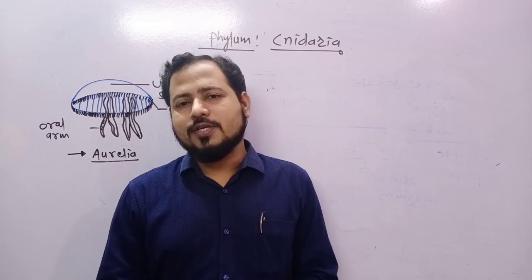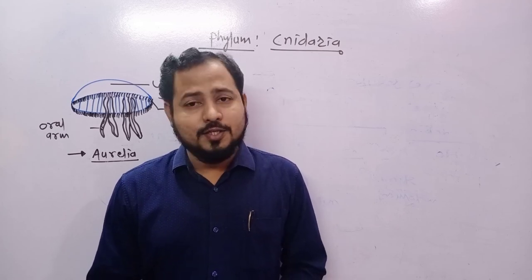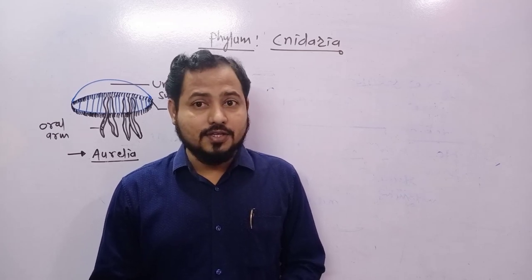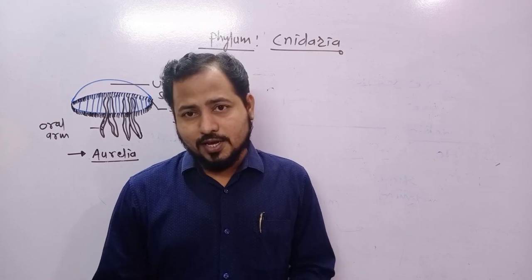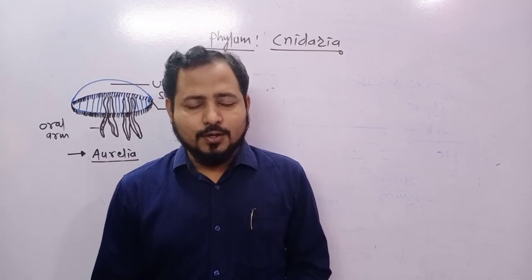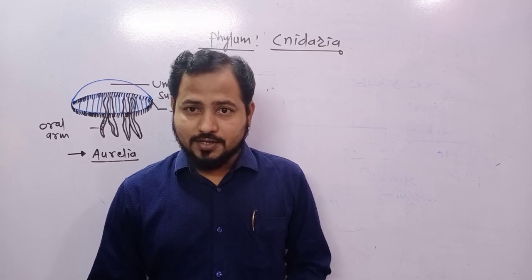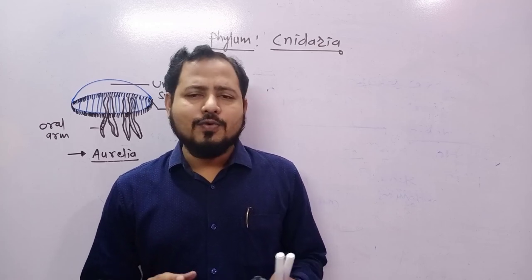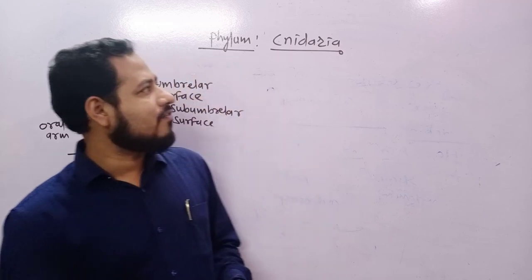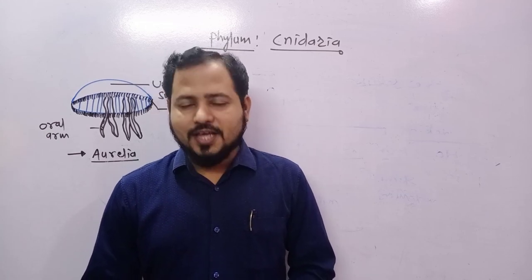This alternation of generation between polyp and medusa is called metagenesis. These characters will help you remember this phylum easily. Phylum Cnidaria or Coelenterata is simplified but a step ahead from Porifera. Thank you so much for watching.